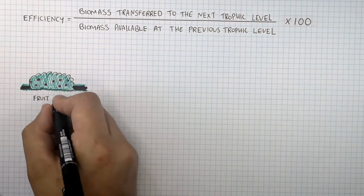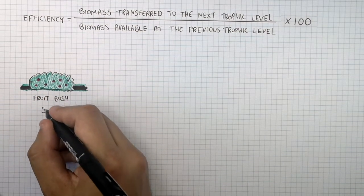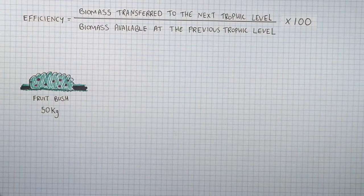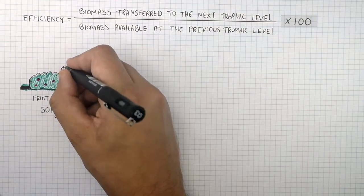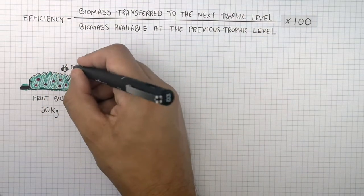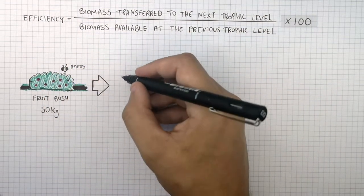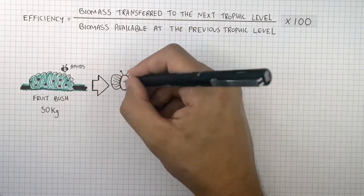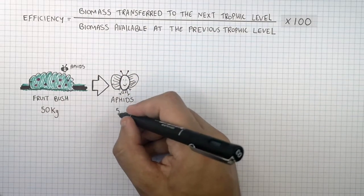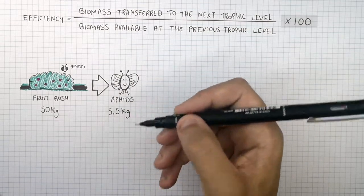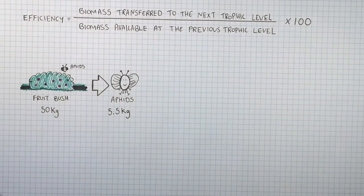This is a fruit bush with a mass of 50 kilograms, so there is 50 kilograms of biomass and energy stored within it. Aphids feed on the biomass of this fruit bush, so 50 kilograms of biomass from the fruit bush is transferred to 5.5 kilograms of biomass stored in the aphids.